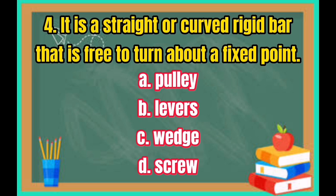Number 4: It is a straight or curved rigid board that is free to turn about a fixed point. A. Pulley. B. Lever. C. Wedge. D. Screw.